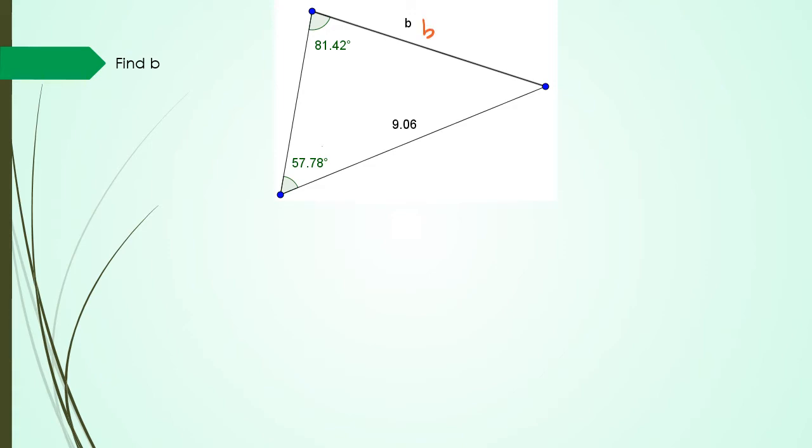If that's B then this is the side opposite to this angle which is 57.78. So that's going to be capital B.